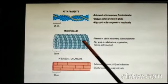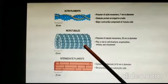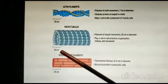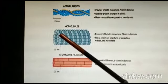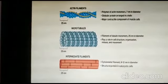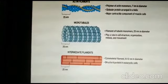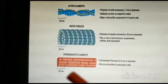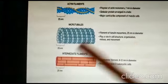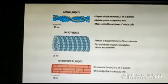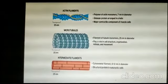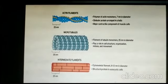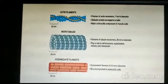These are the microtubules — the thickest filament, with a diameter of 25 nanometers. They are made up of two types of tubulin: alpha and beta tubulin. And this is the intermediate filament. It is called intermediate because its diameter is between the actin filament and microtubules, at about 8 to 12 — approximately 10 nanometers in diameter.